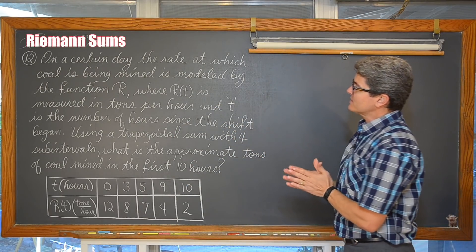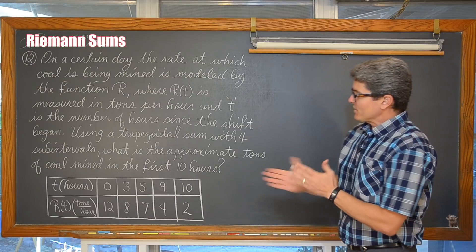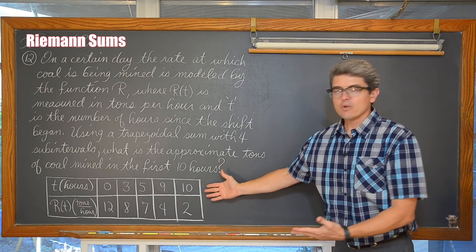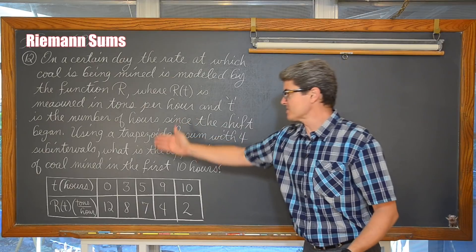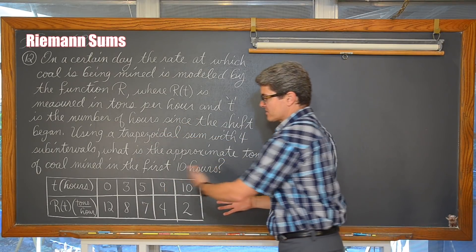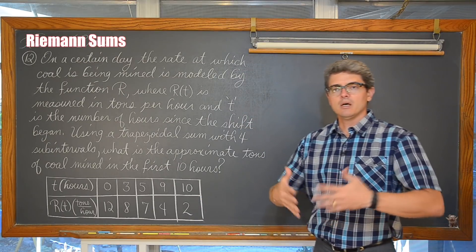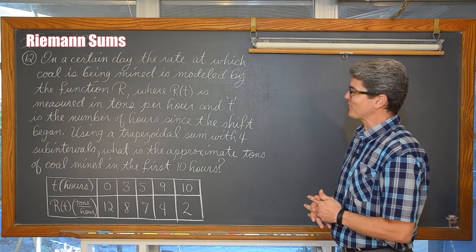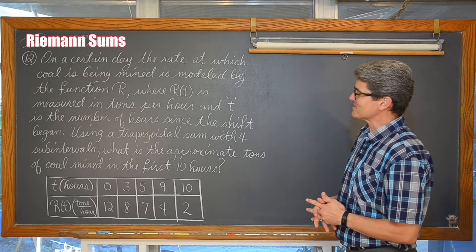We are going to be looking at this first example involving Riemann sums using a trapezoidal sum. We are given some information in basically a little table here. They like to do this with all the review material I have been using with my kids getting ready for the AP Calculus exam.